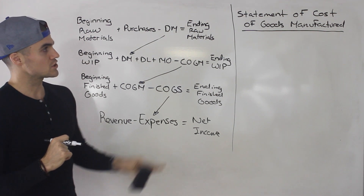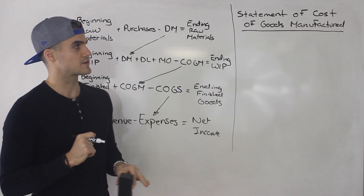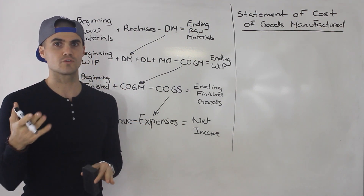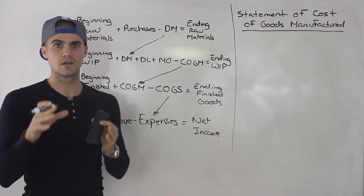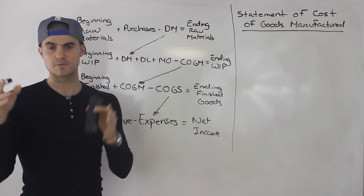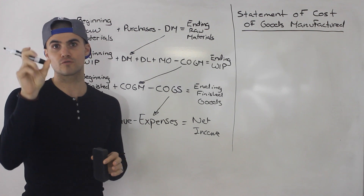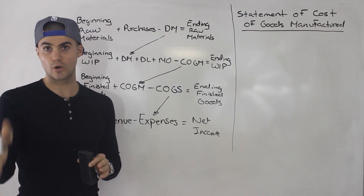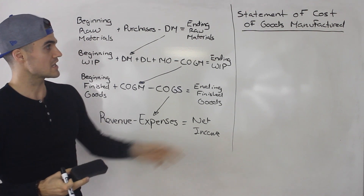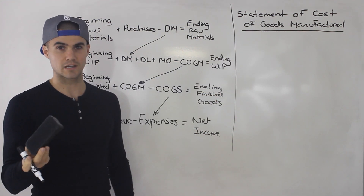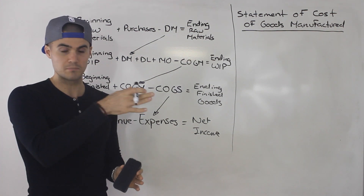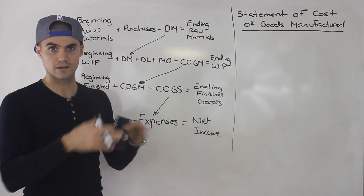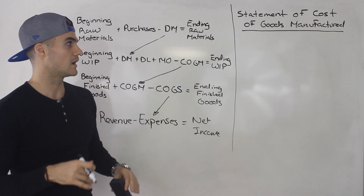The first thing I want to mention about a statement of cost of goods manufactured is that it looks at an interval of time — over a period of time. If you remember from financial accounting, an income statement looked over a period of time, so you had for the month ended or for the year ended, while a balance sheet only looked at a specific point in time. The statement of cost of goods manufactured is very similar in that way — it looks over a period of time.